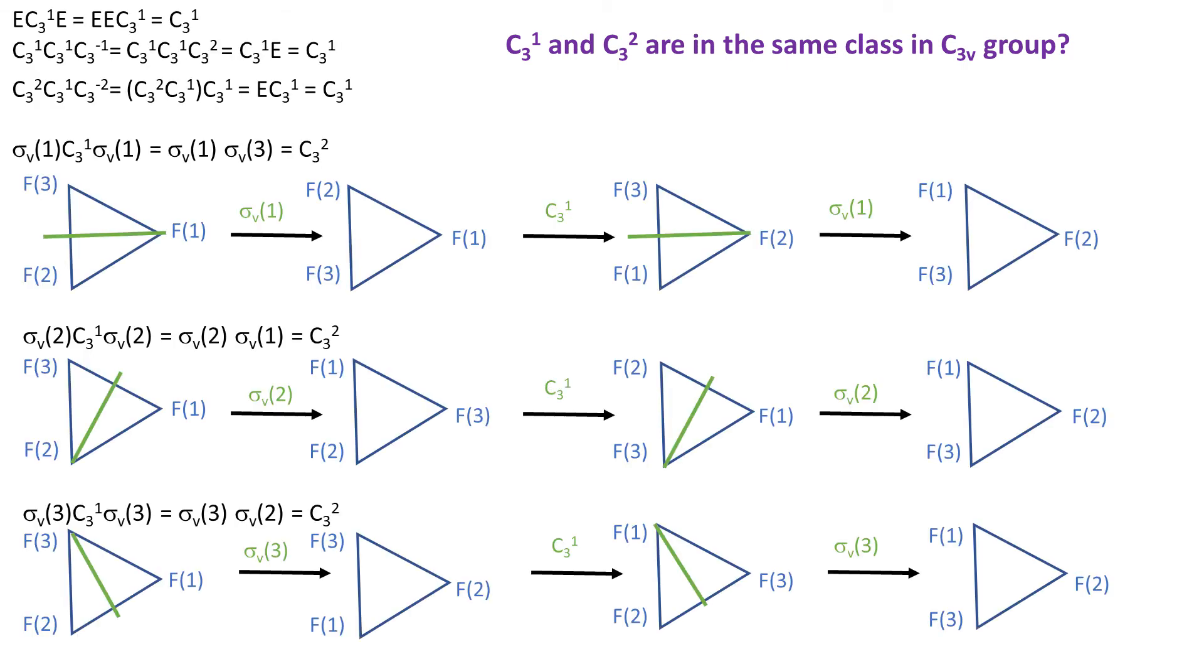Now let's see why C3-1 and C3-2 are in the same class in C3V group. So let's start with C3-1 and let's do a similarity transformation with every other element, please remember to include C3-1 as well. E is trivial, so are the rotations.